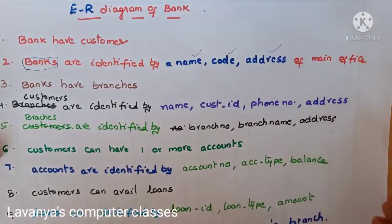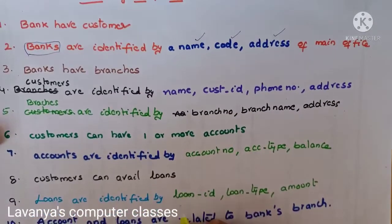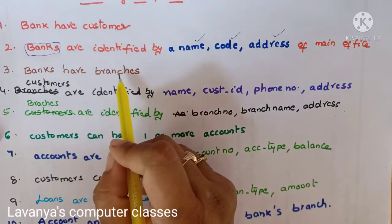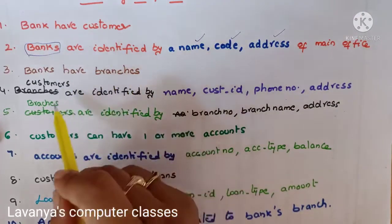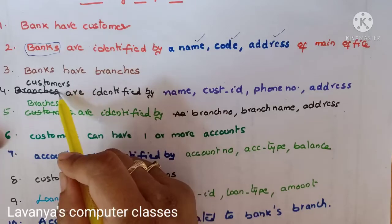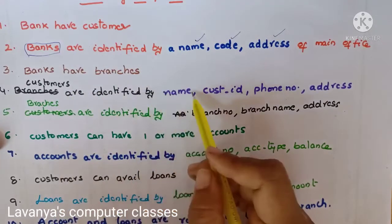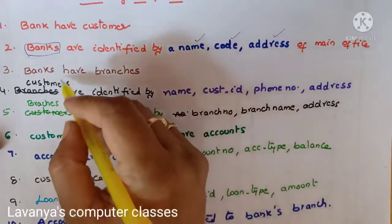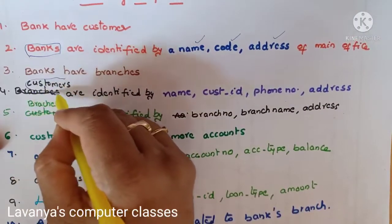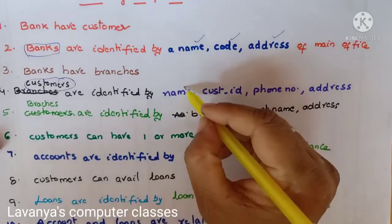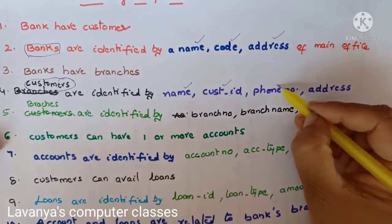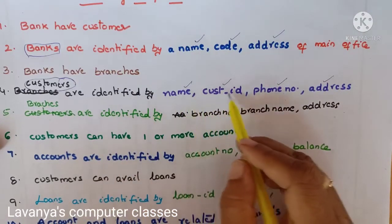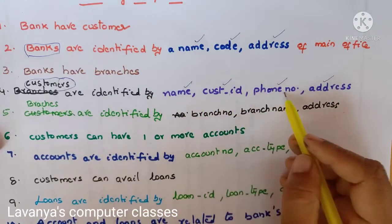Banks also have branches. Customers are identified by name, customer ID, phone number, and address. This is also another entity set. Customer is the entity set, and its attributes are customer name, customer ID, phone number, and address.